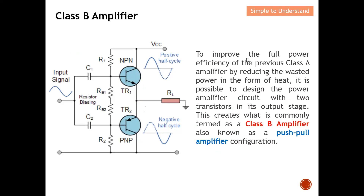To improve the full power efficiency over the previous Class A amplifier, we reduce wasted power in the form of heat. Remember, for Class A, with or without an input signal, the Vcc is on all the time, meaning Ic is drawn all the time. When current is drawn with no input signal, it generates heat and is unproductive. The Class B amplifier is designed to resolve this issue.